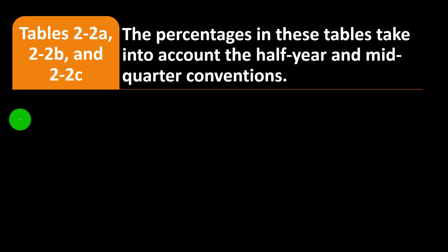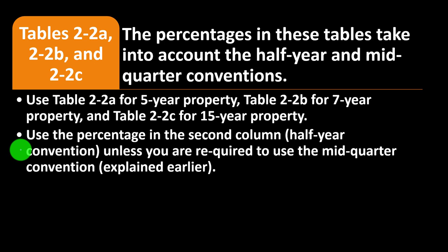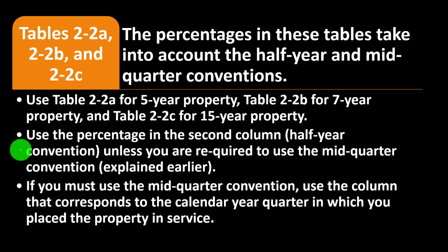Tables 2-2A, 2-2B, and 2-2C take into account the half-year and mid-quarter conventions. Use Table 2-2A for five-year property, Table 2-2B for seven-year property, and Table 2-2C for 15-year property. Use the second column — half-year convention — unless you are required to use the mid-quarter convention. If you must use the mid-quarter convention, use the column corresponding to the calendar year quarter in which you placed the property in service. In practice, software handles these calculations, but understanding them is important for planning.